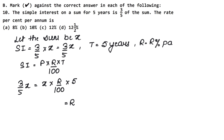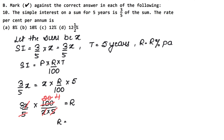r is our variable. Three-fifth of the sum is our simple interest. Multiplying hundred, and dividing by x and five. We cancel x with x. Five ones are five, five twos are ten — so we get 5×4 = 20 in denominator, and 3×4 = 12 in numerator. So the rate is 12% per annum. Hence our correct answer is option C. Let's do the next question now.